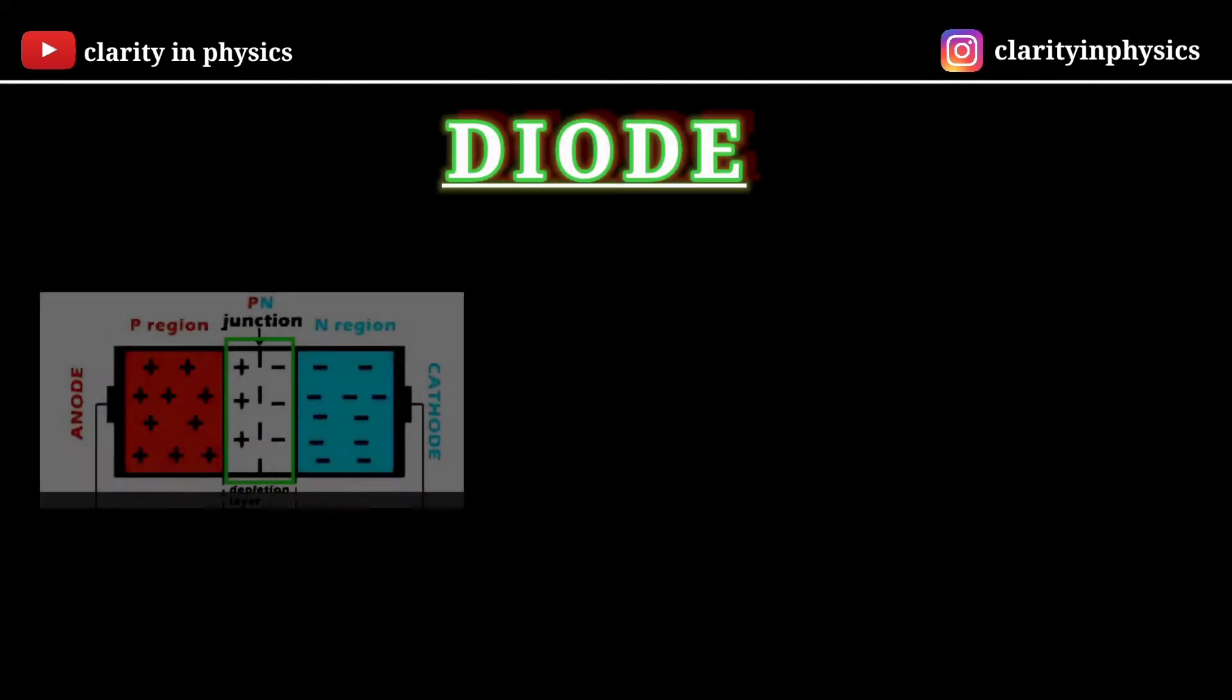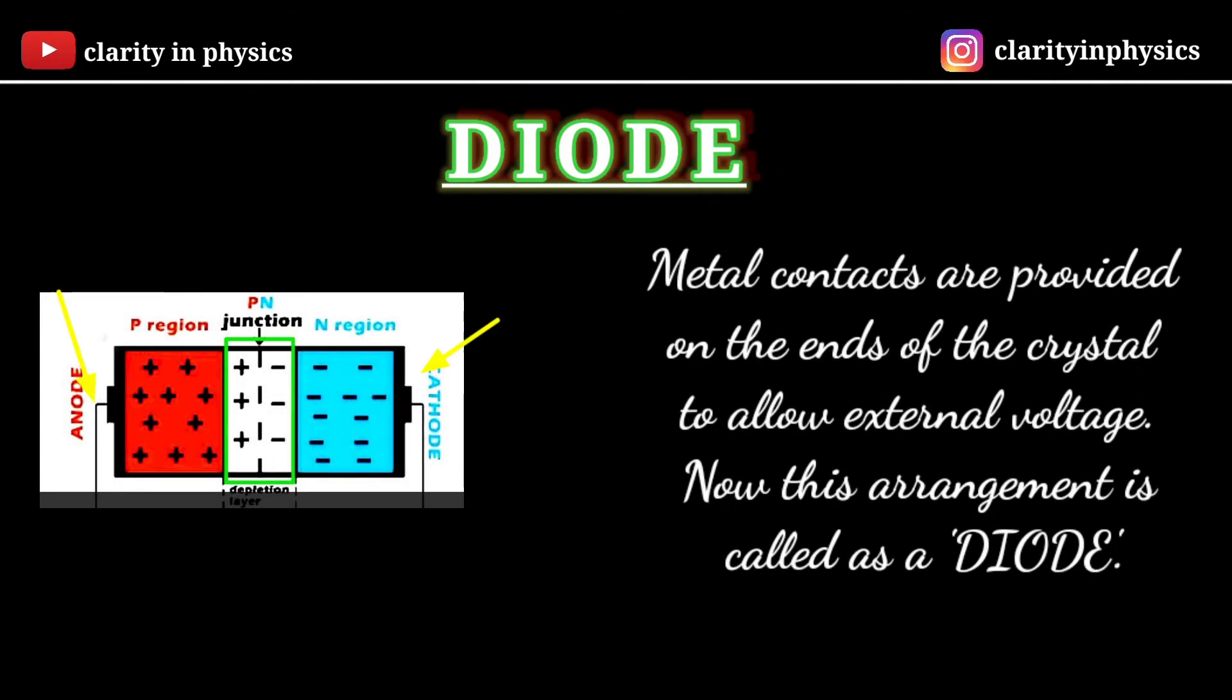Now let us talk about Diode. Metal contacts are provided on the end of the crystal to allow external voltage. This arrangement is called Diode and the symbol of Diode is shown.